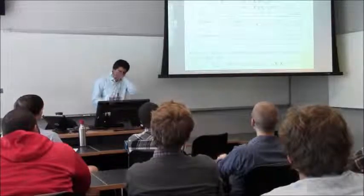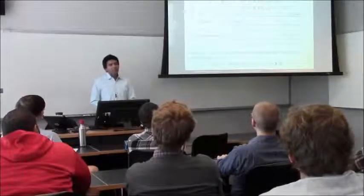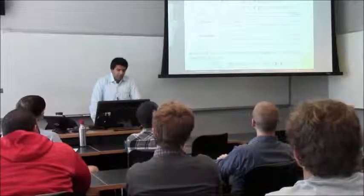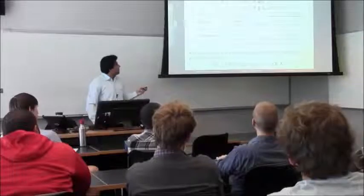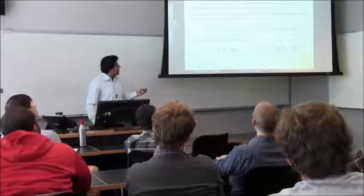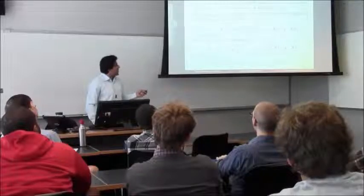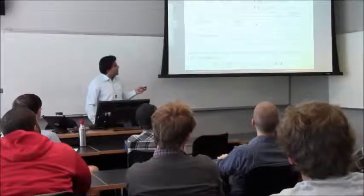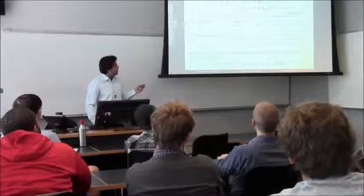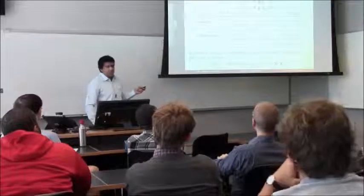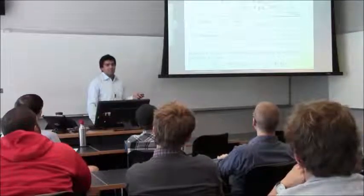Whereas Bayesian regression on the other hand, we'll try to find the posterior distribution of beta and sigma squared given the x matrix and the y values. The point I want to stress here is when we have no prior information or very uninformative prior information, Bayesian methods and frequentist methods will more or less give the same answers.